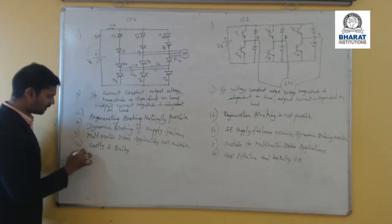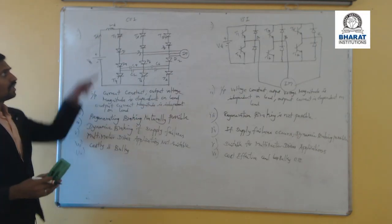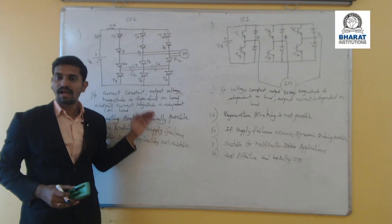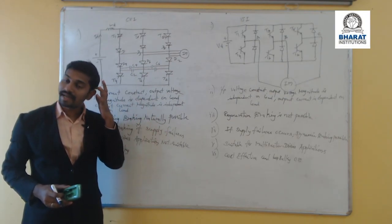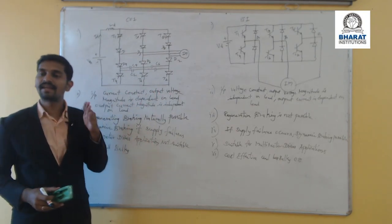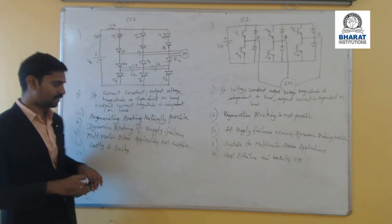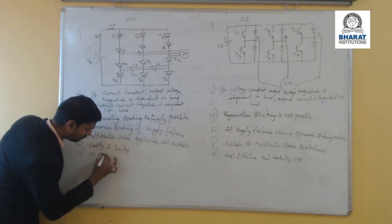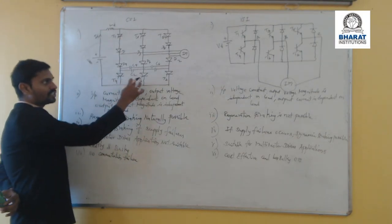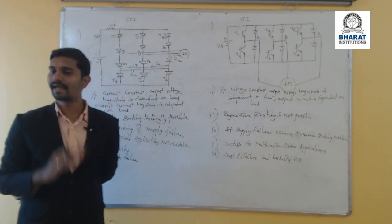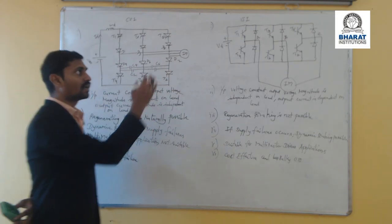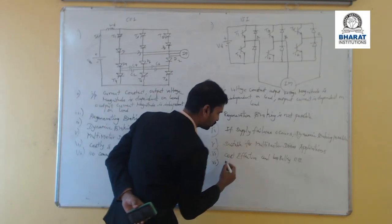Another comparison: if two devices from the same leg are connected, there will be an occurrence of commutation failure. In current source inverters, this is taken care of by the capacitors — each thyristor's commutation is managed by the capacitors, so there is no commutation failure. But in voltage source inverters, commutation failure can occur.